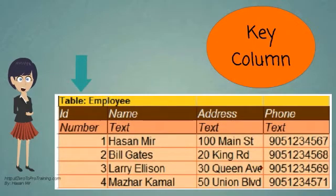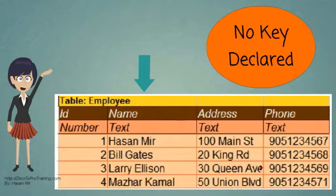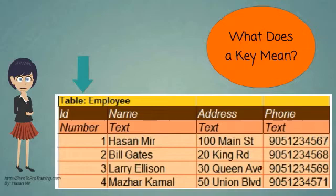Let's say there is a table employee that has a column ID which is declared as a key column. And there is another column called name that has no key declared on it. What would the key mean in practice?